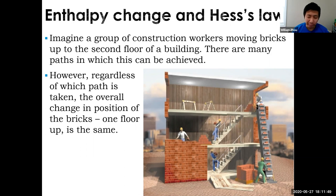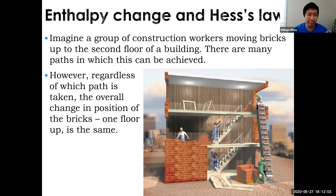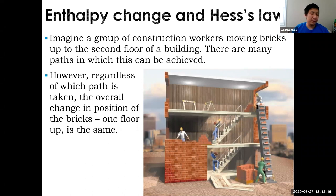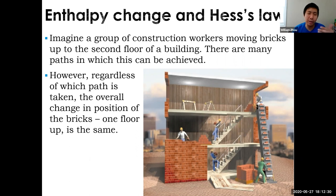Or you can carry the bricks all the way up to the third floor, take the stairs down, and give the bricks to the bricklayer. Both of these strategies will achieve the same goal — the bricklayer gets the bricks. The change in the overall potential energy of the bricks is the same. The brick on the ground has no potential energy; the bricks on the second floor have a specific potential energy, but it doesn't matter how you got there. We really just care about the end goal.